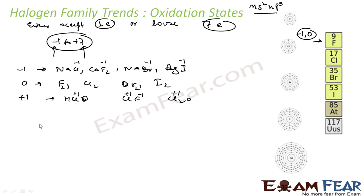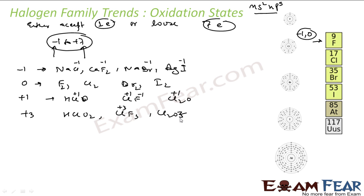For plus 2, we don't have any example. For plus 3, we have HClO2, ClF3, and Cl2O3. In ClF3, chlorine has an oxidation state of plus 3. In Cl2O3, chlorine also has plus 3 oxidation state.